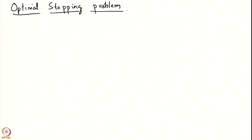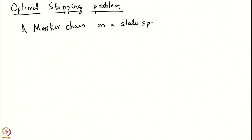This problem is called the optimal stopping problem. In an optimal stopping problem, there is a Markov chain that evolves in the background on a state space. Let us call this state space S dash. This Markov chain could be stationary or possibly non-stationary. We will assume that S dash is finite here.